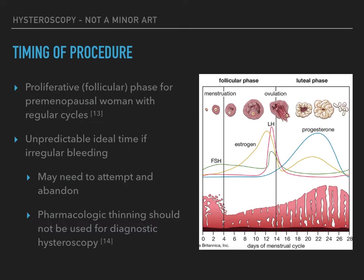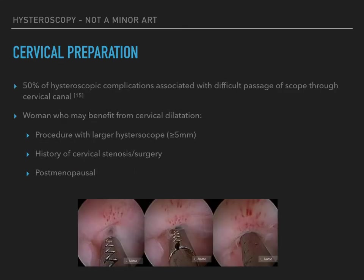Another approach is pharmacologic thinning of the endometrium. However, thinning agents should only be used when the surgeon plans operative hysteroscopy, resection of a leiomyoma, or endometrial ablation. Thinning agents should not be used when diagnostic hysteroscopy alone is planned, as these hormones may influence the histology of the endometrium. The most commonly used agents are estrogen-progestin contraceptives or progestins alone. For postmenopausal women, hysteroscopy may be performed at any time. Adequate cervical dilation is an important step, as nearly 50% of hysteroscopic complications are associated with difficult passage of the hysteroscope through the cervical canal. Women who benefit from cervical dilation include those having procedures with larger hysteroscopes, women with a history of cervical stenosis or cervical surgery, and postmenopausal women.